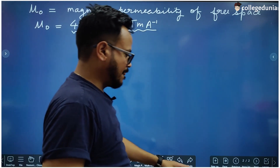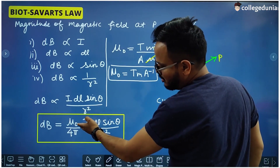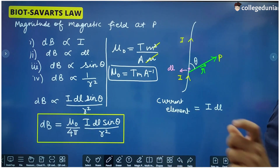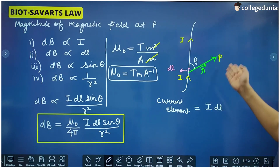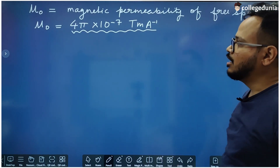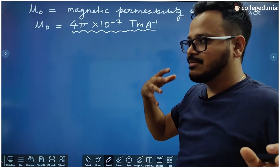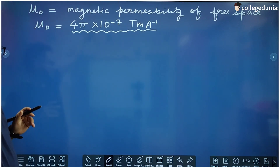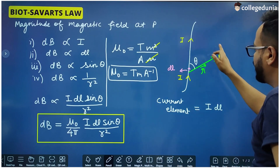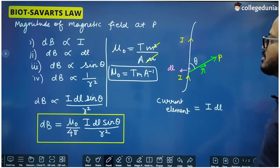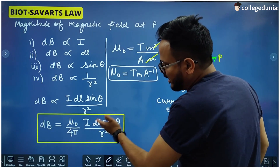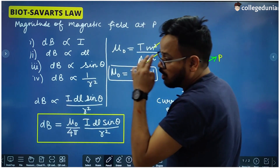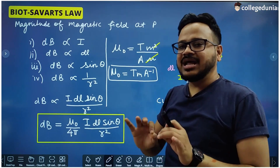If we substitute μ₀ = 4π × 10⁻⁷ into the formula, then 4π and 4π cancel out and 10⁻⁷ is the only constant remaining — but only when air or vacuum is present. If there is some other medium like water, benzene, or oil between the conductor and the point, we have to use the magnetic permeability of that medium. For example, if the conductor is dipped in water, we write μ_w (permeability of water) in place of μ₀; all other things remain the same.